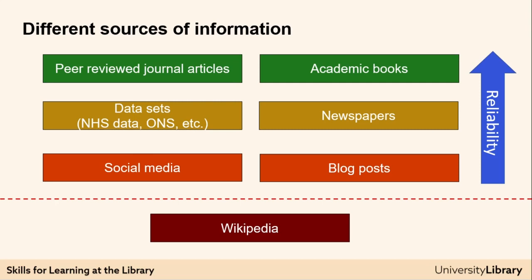We will start with peer-reviewed journal articles. These are articles written by academics and then checked by other academics to ensure they have reached some level of reliability before being published — that checking is known as the peer-review process. That doesn't mean everything in those articles is correct, but it is the most reliable source of information we have — our gold standard for evidence. These peer-reviewed journal articles are what you should be using most regularly to support your writing.